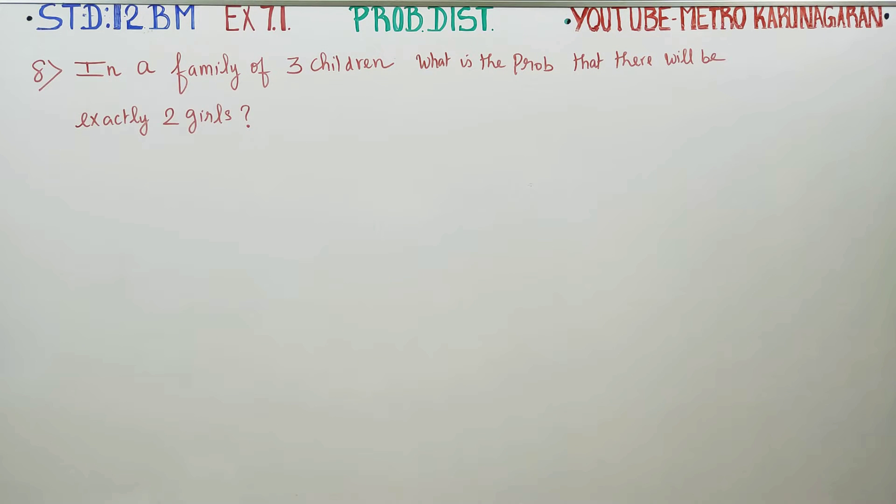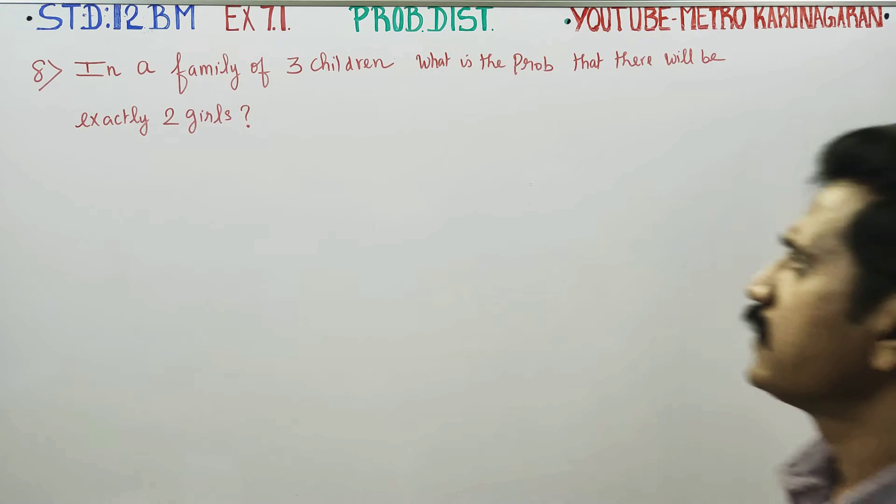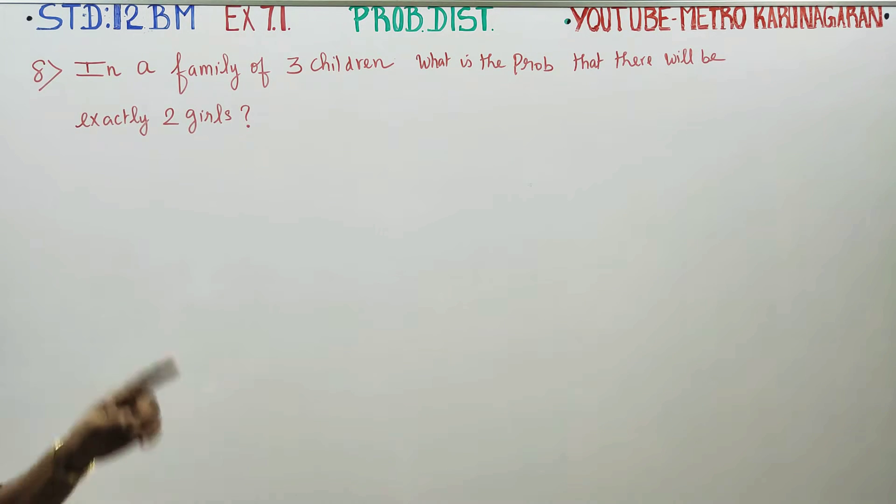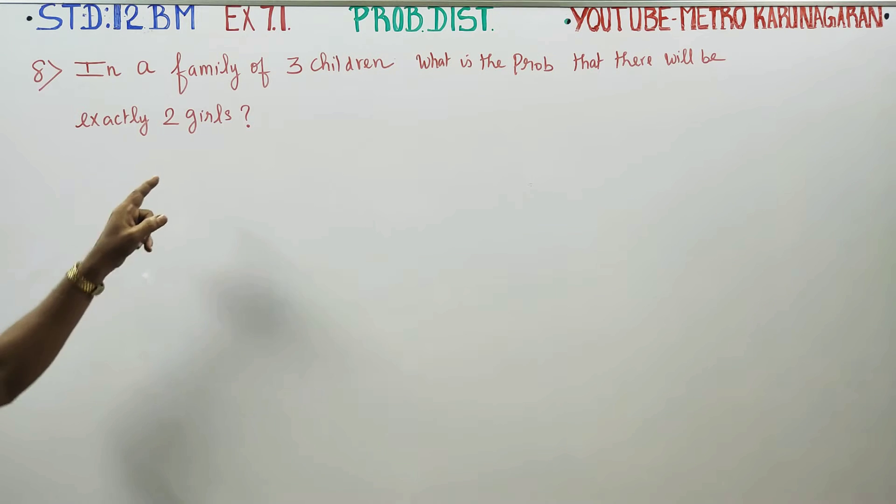Dear 12 standard students, in exercise no. 7.1, problem no. 8: in a family of 3 children, what is the probability that there will be exactly 2 girls?